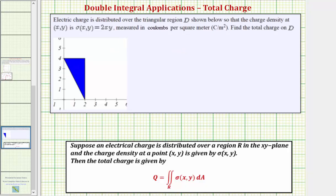If you look at our notes below, suppose an electrical charge is distributed over region R on the xy plane, and the charge density at the point x comma y is given by sigma of x comma y, then the total charge over the region R is given by this double integral.